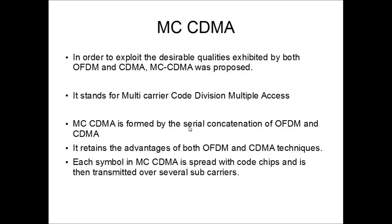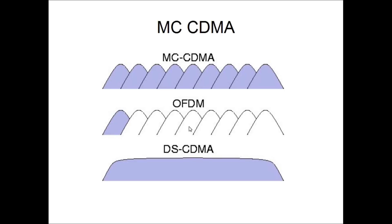Moving over to Multi-Carrier CDMA, which is the crux of the project I am presenting today. We have seen the advantages of CDMA and OFDM individually, but together the efficiencies achieved are much higher. As a result, MC-CDMA was proposed — Multi-Carrier Code Division Multiple Access — which is a combination of OFDM and CDMA, formed by their serial concatenation. Here you can see the spectrum of DS-CDMA, which is a singular spectrum where users employ different codes but no sub-channels, whereas in OFDM there are many sub-channels but no specific codes.